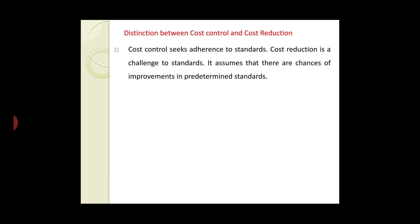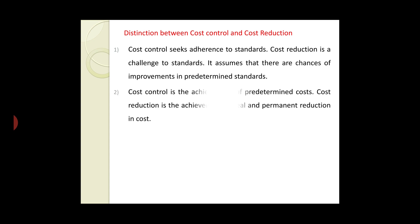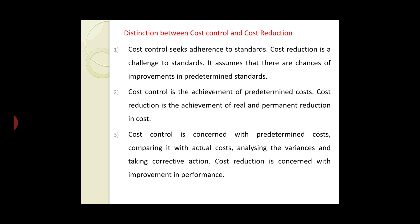We assume there is always a chance of improvement in predetermined standards. Cost control is the achievement of predetermined cost — comparing the predetermined standard with actual performance. Cost reduction is the achievement of real and permanent reduction of cost. Cost control is concerned with predetermined cost, comparing it with actual cost, analyzing the variance, and taking corrective action.